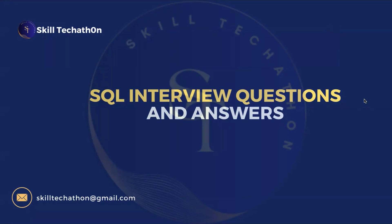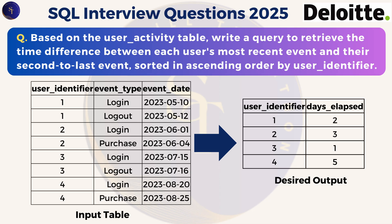Hello and welcome to Skill Techathon. This is the SQL interview questions and answers series. Today we are going to look into one of the SQL interview questions asked in an interview. We have been given an input table and a desired output table. The question is based on the user activity table, and we need to write a query to retrieve the time difference between each user's most recent and their second to last event.